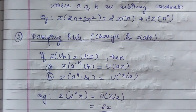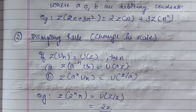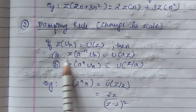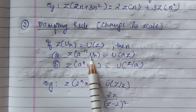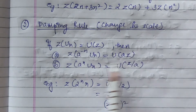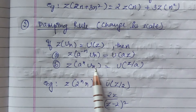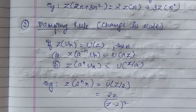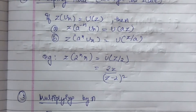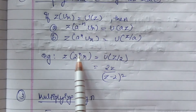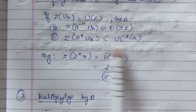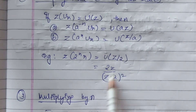Next is the damping rule, which is a change of scale. If Z{u(n)} = U(z), then Z{a^(-n)·u(n)} = U(az) and Z{a^n·u(n)} = U(z/a). For example, Z{2^n · n} = U(z/2) by using this property, which leads to further evaluation using the formulae we have studied before.